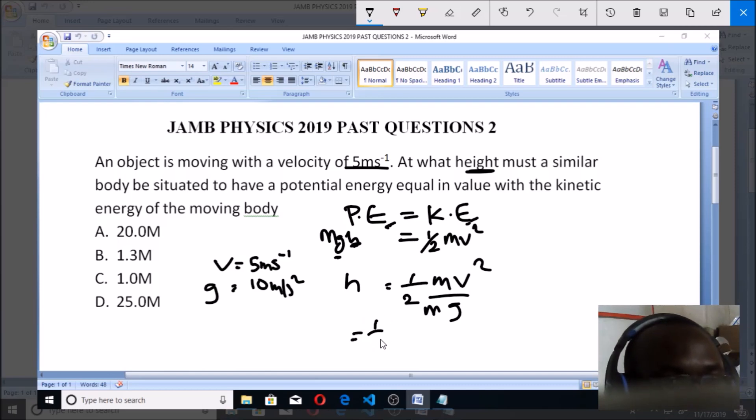m cancels m, so you have only v² over g. This equals ½ times v², which is 5², so you have 25 over g, which is 10. So you simply have 25 over 20, which equals 1.3 meters.